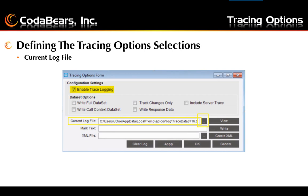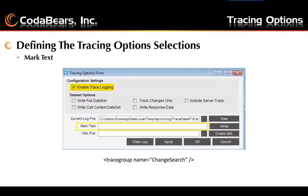The current log file will have a default value filled in, or you can change this by using the browse button next to the current log file to save this file to another location. Once you click apply or OK, the location will then become the default location for the log file for this client. Use the mark text box text field to enter text that you would like to find more easily in the log output. Click the write button to use this option. All of the mark text portions will be grouped together in the log file. You will enter the text in the mark text box and then click the write button directly before and after the steps you want to highlight, then search for the text in the log file or view it in the XML file.